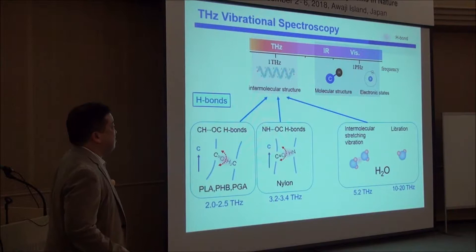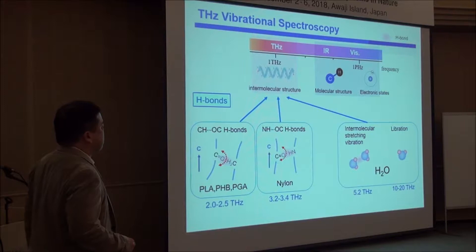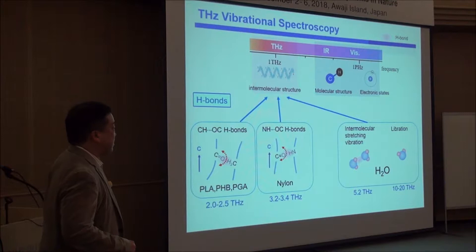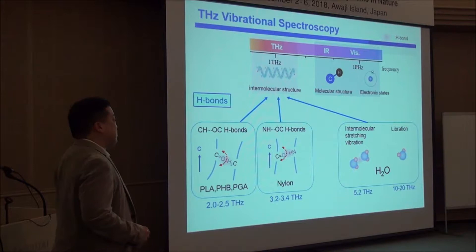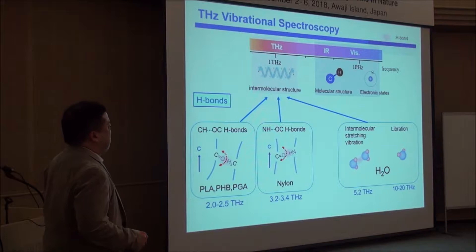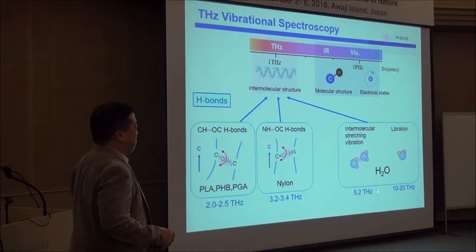The hydrogen bond is the key to understanding terahertz spectra. Here I summarize the hydrogen bonds we encounter in terahertz, especially for macromolecules. For example, when we observe the PLN-PHB polyester which has C–H···O=C hydrogen bonds, we often see intense vibrational bands at 2.0 to 2.5 THz. When it has N–H···O=C hydrogen bonds, we often see intense bands at 3.2 to 3.4 THz. This is very well known.